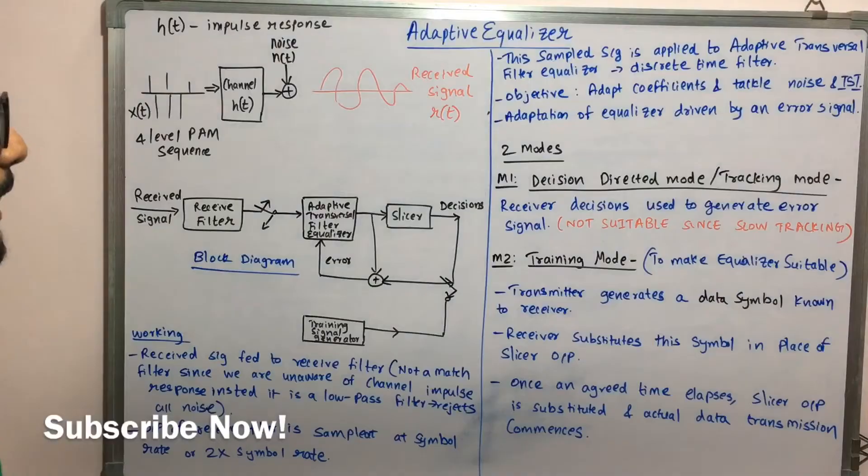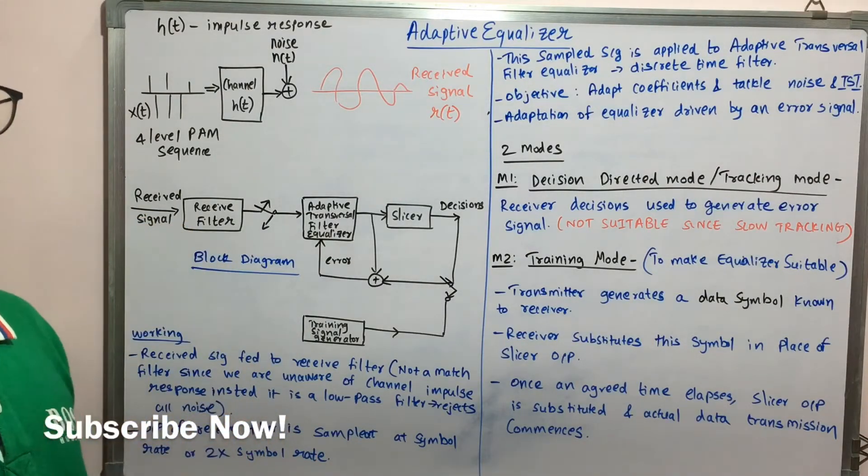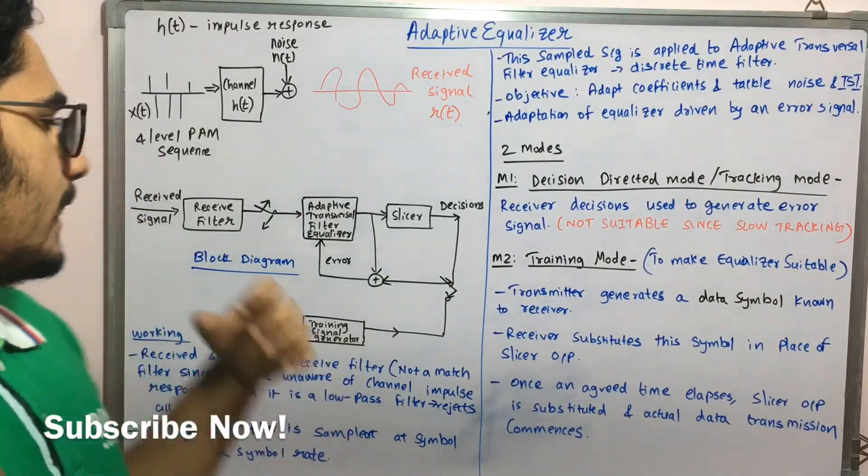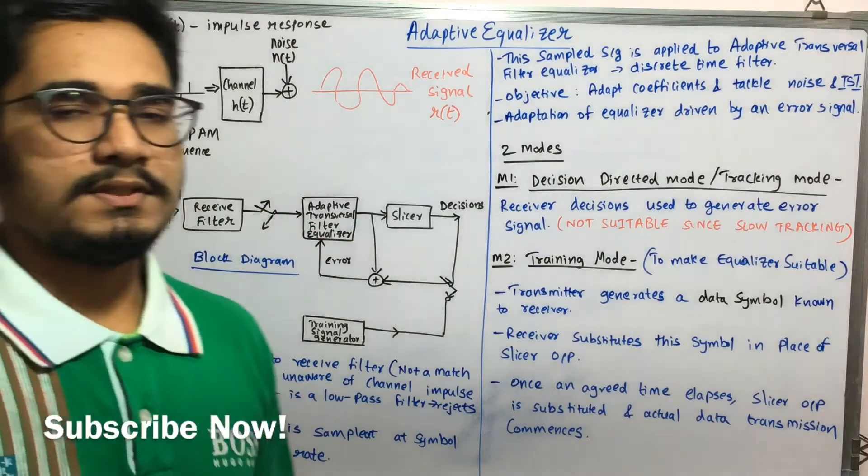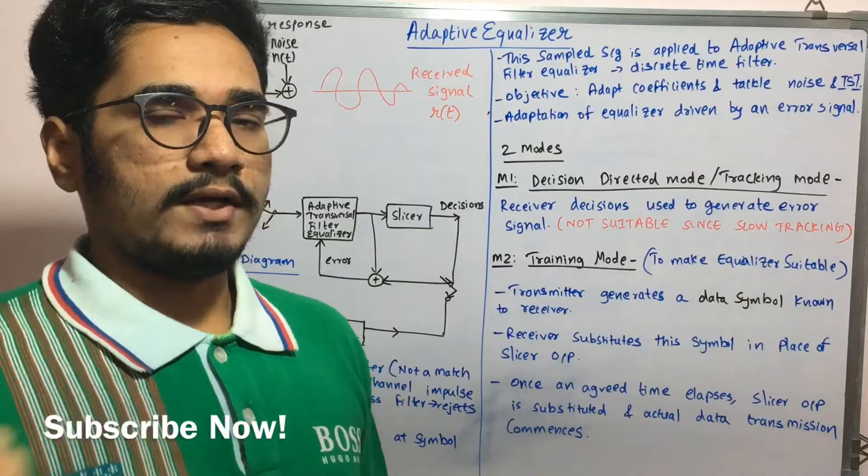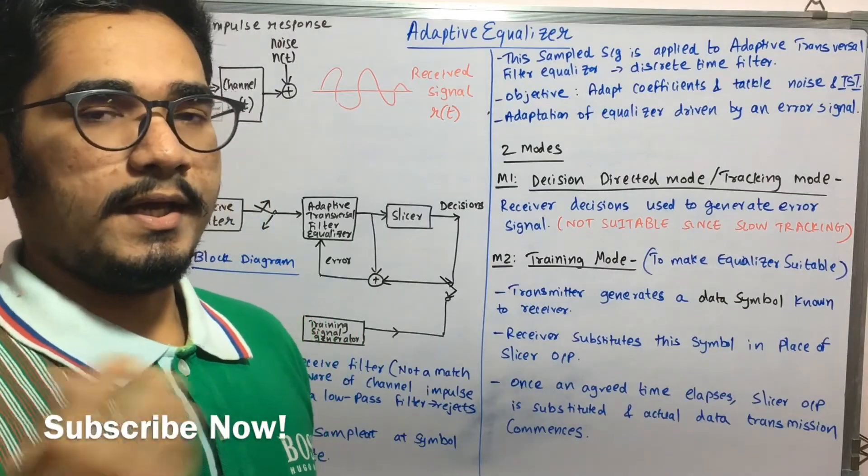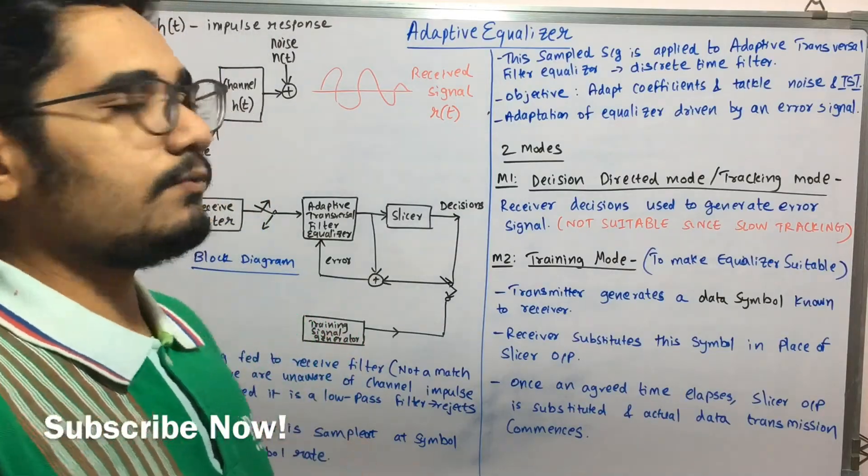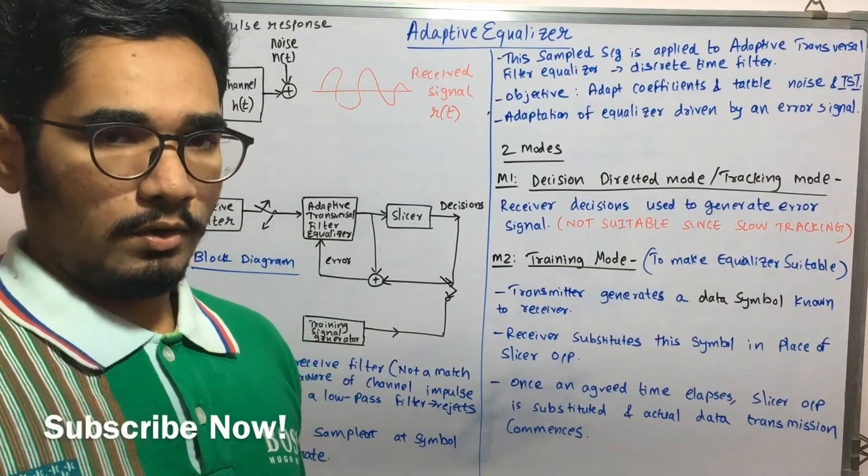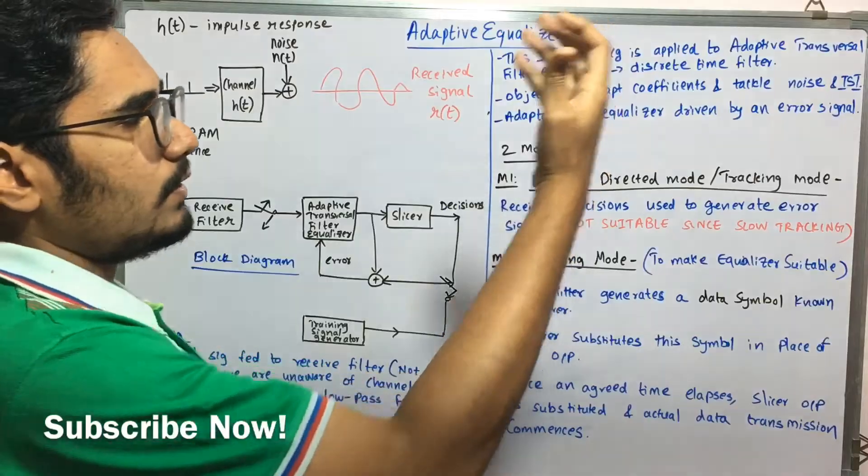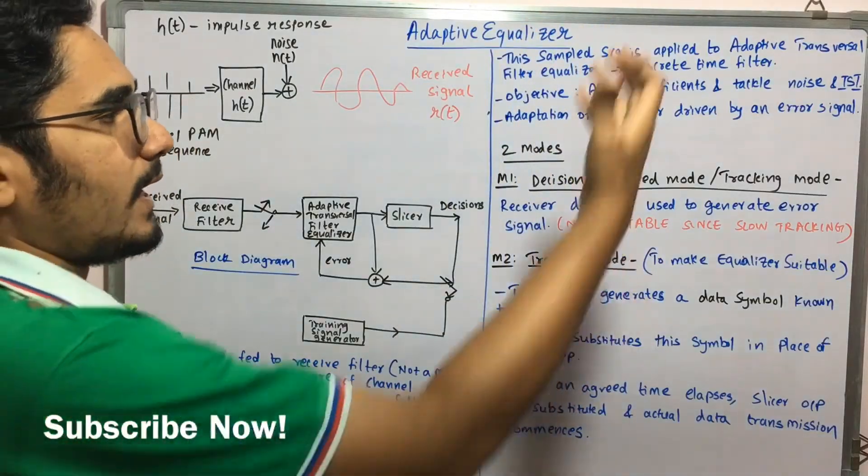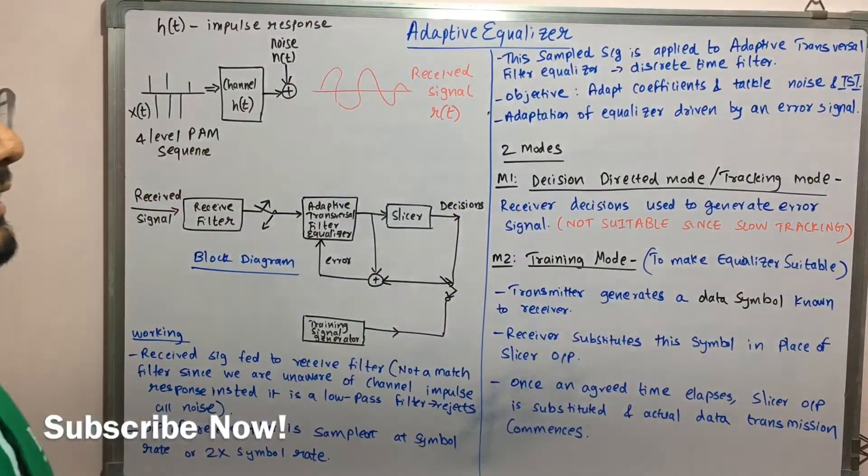Now this objective mainly is to adjust all the coefficients which are there, like you have many functionalities or many delays in this signal or in this process. So preprocessing activity involves many kinds of other parameters like additive white Gaussian noise or AWGN networks will be there. So all those coefficients will be adapted in order to tackle or eliminate the noise and as well as the ISI, that is inter symbol interference.